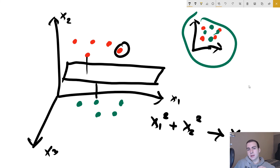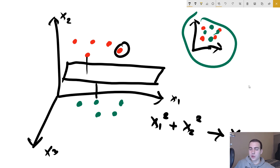That is essentially how a support vector machine works. I'm not going to go any further than this, because it's just going to get way more confusing and involve way more math — there's a ton of stuff behind how we generate this. This is a super high-level understanding, but now you know enough to be able to implement this and tune some parameters.